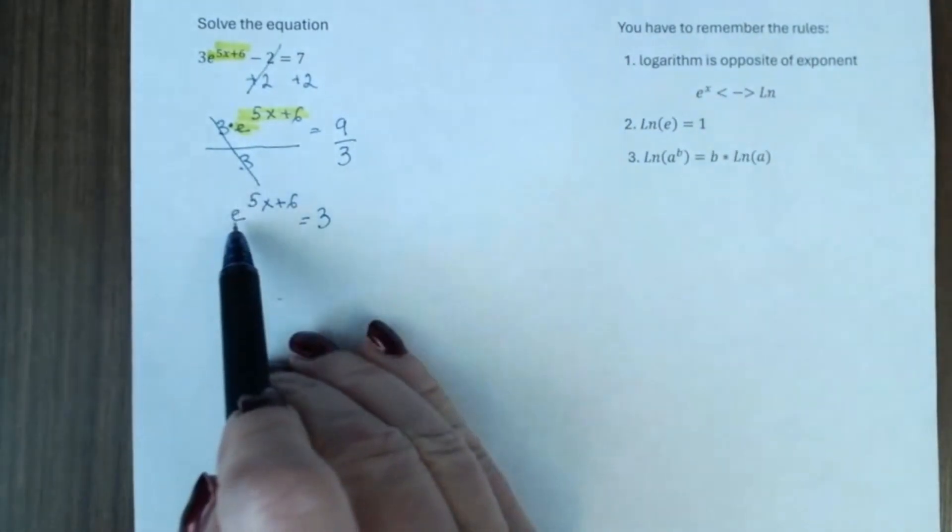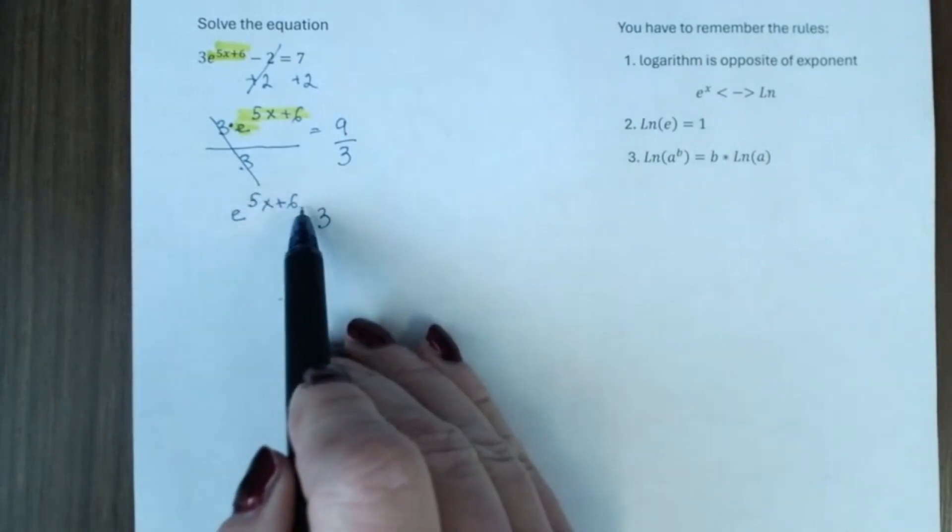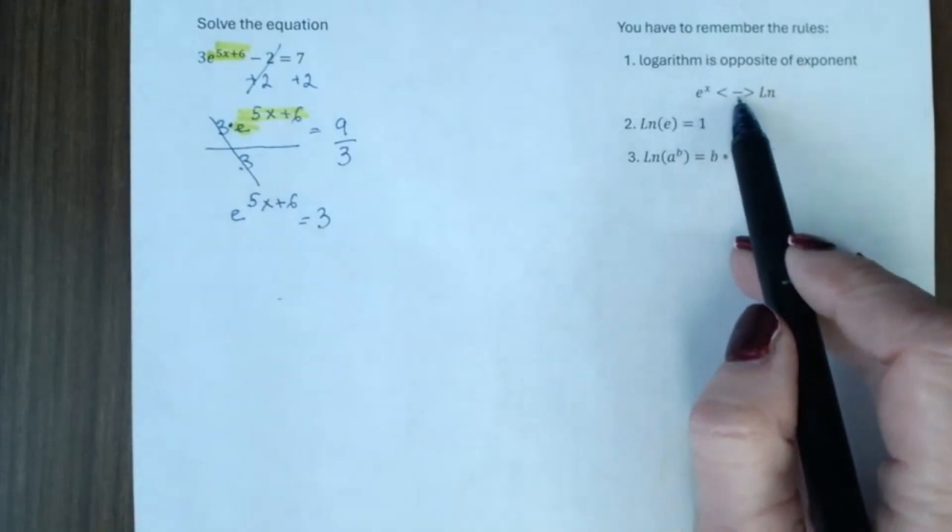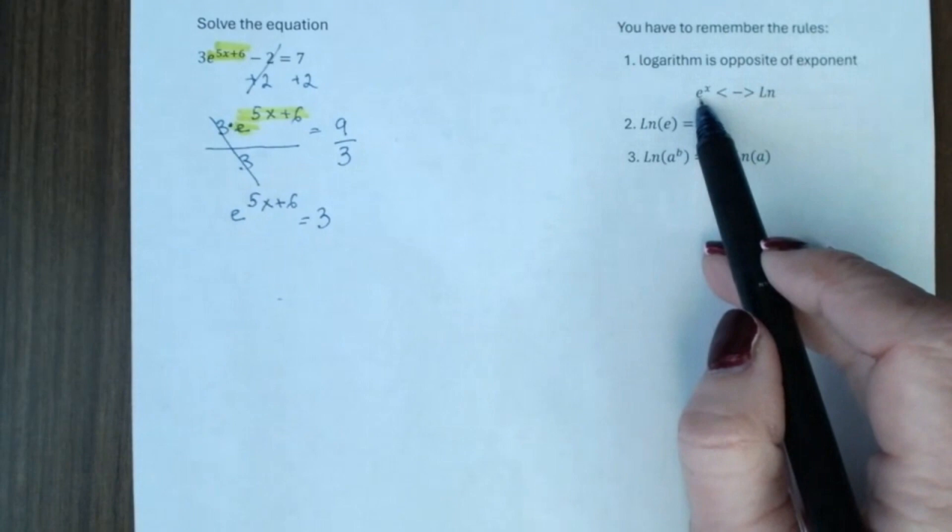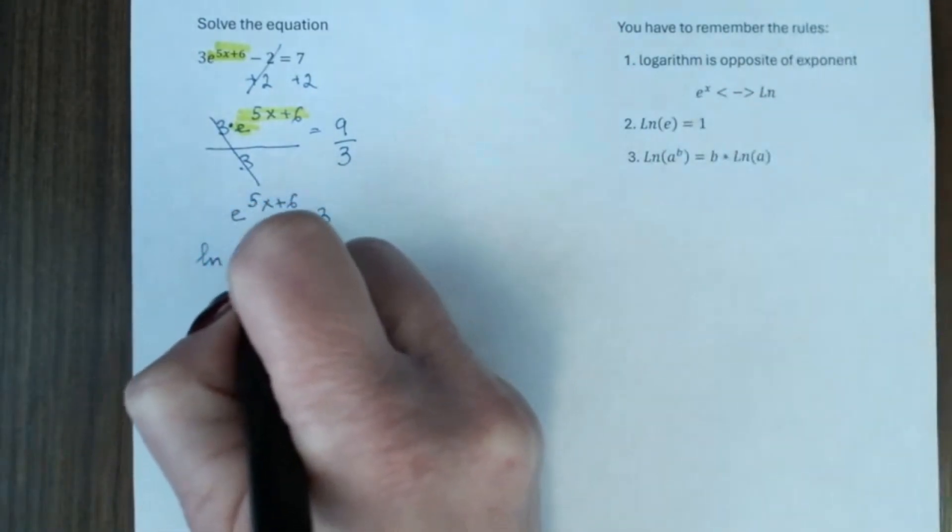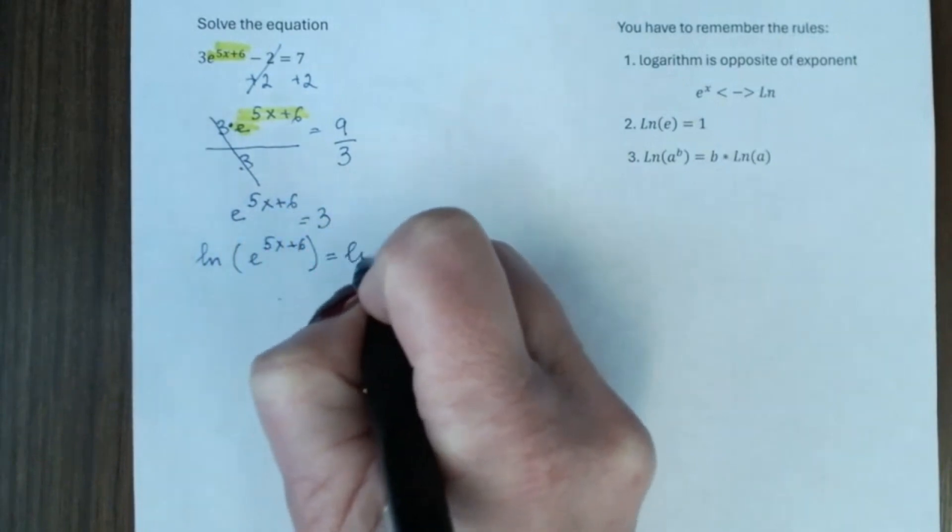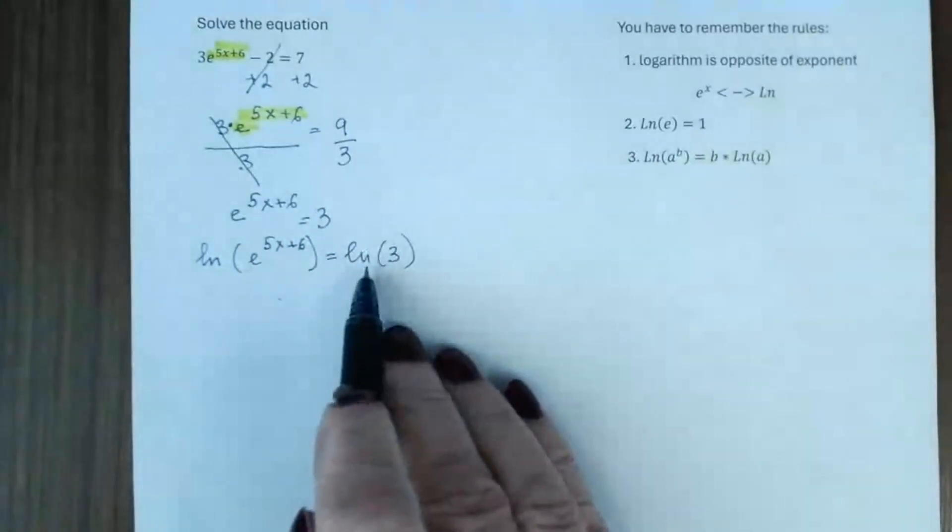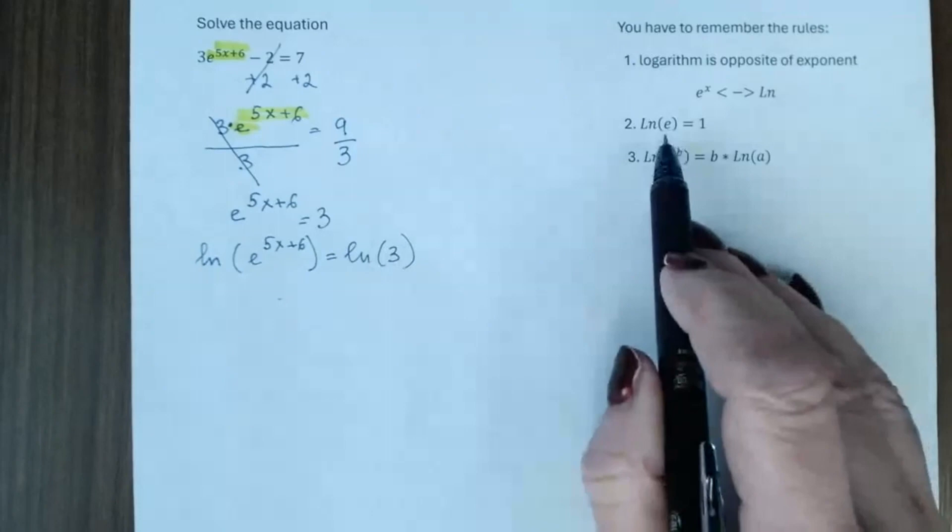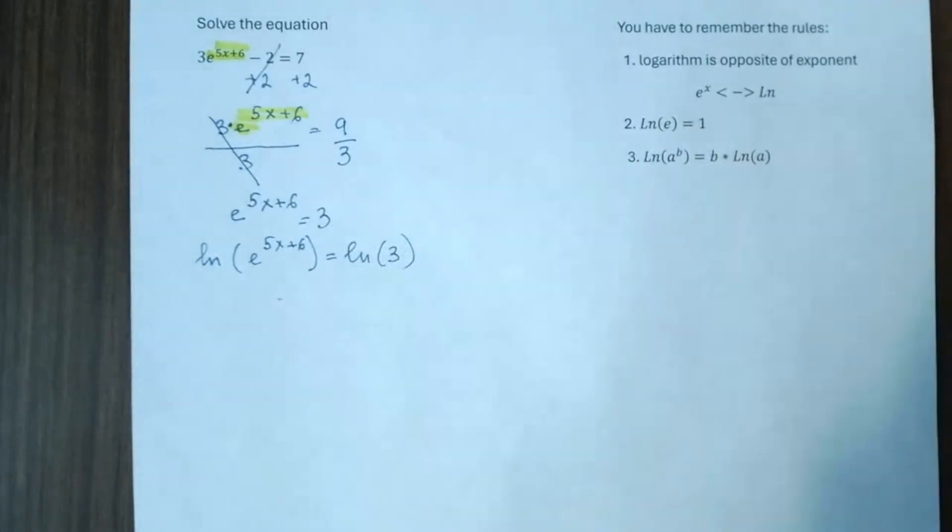Now, we have the base to the exponent by itself on one side. And we are ready to use the first rule. The logarithm is opposite of exponent. It means we need to use a logarithm to both sides. And you see that I just wrote down a logarithm, natural logarithm. Because we have e and e in natural logarithm are opposite.